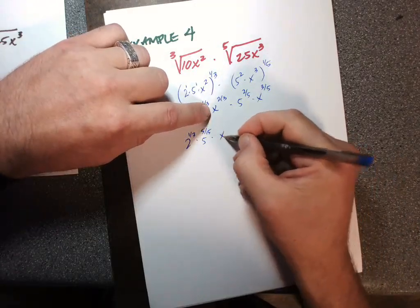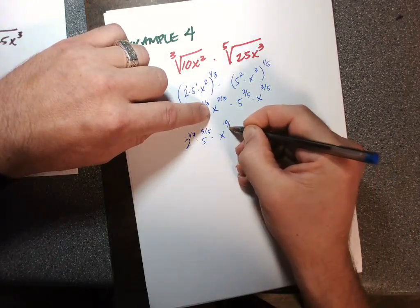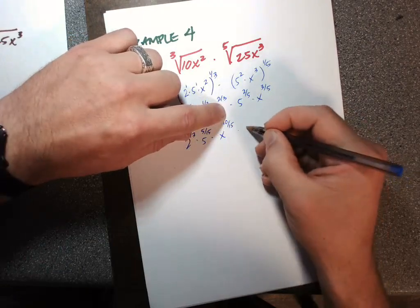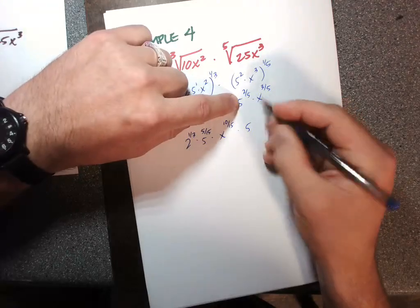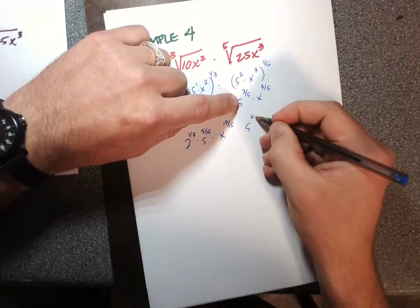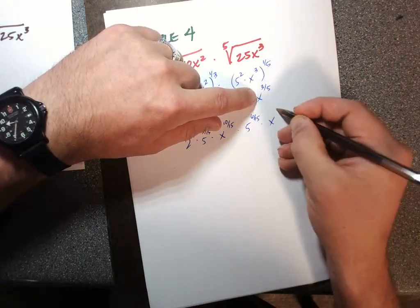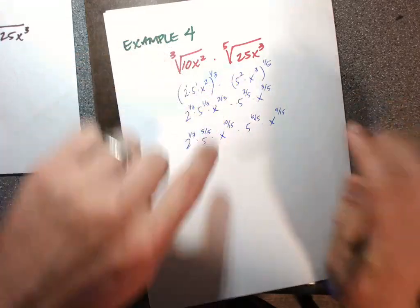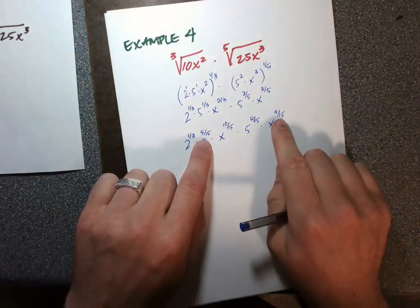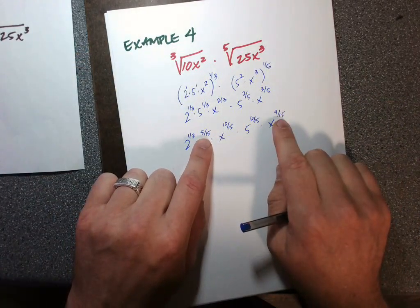And x, same thing here. We're going to make this ten-fifteenths. It's two-thirds, multiply this by 3, and this one by 3. Okay, so now they have the same denominator so that we can add those.